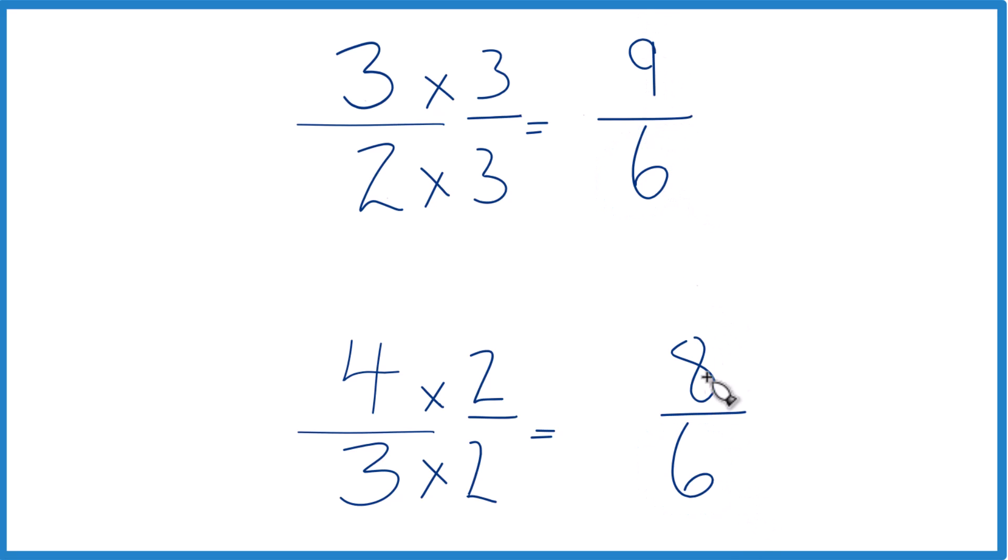And 9, that's greater than 8. So 9 over 6 is greater than 8 over 6. Only by 1 over 6. 9 minus 8 is 1. So only by 1 over 6, but it's still greater.